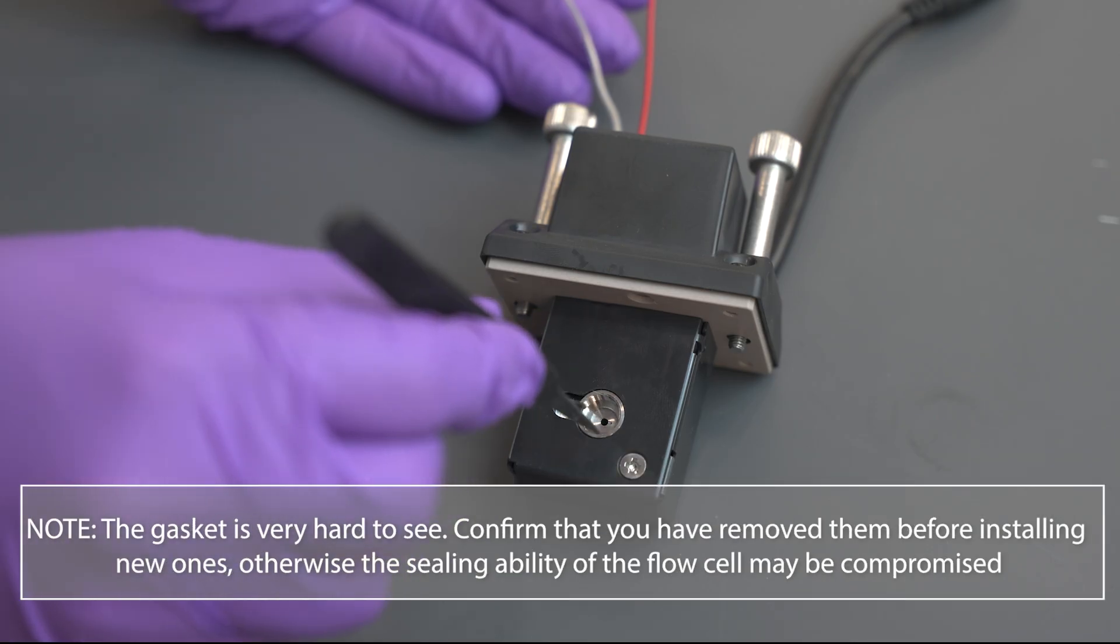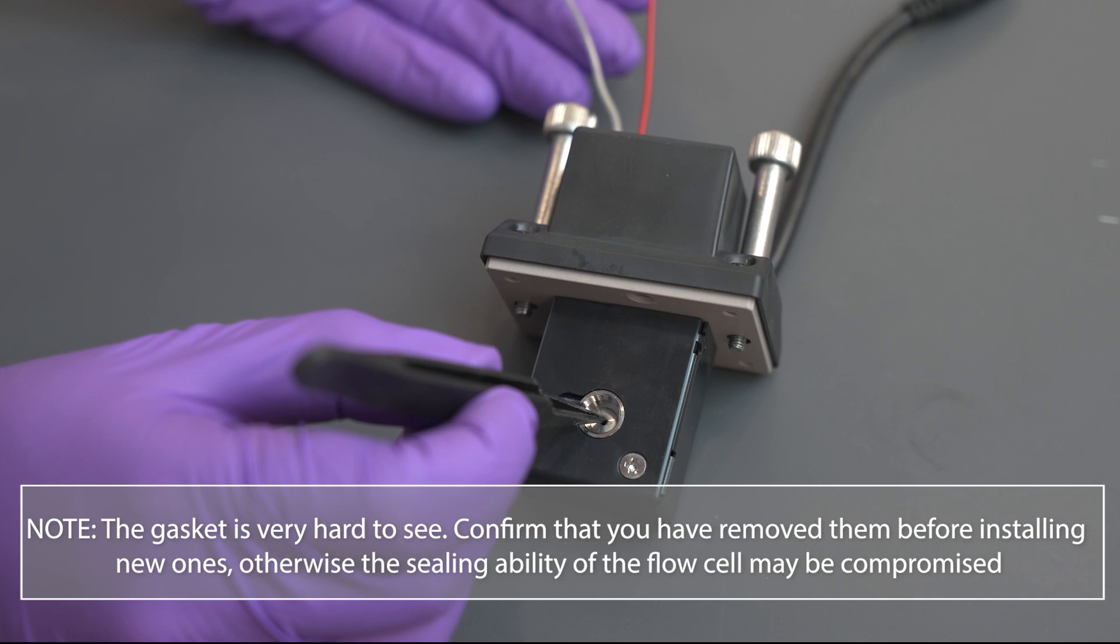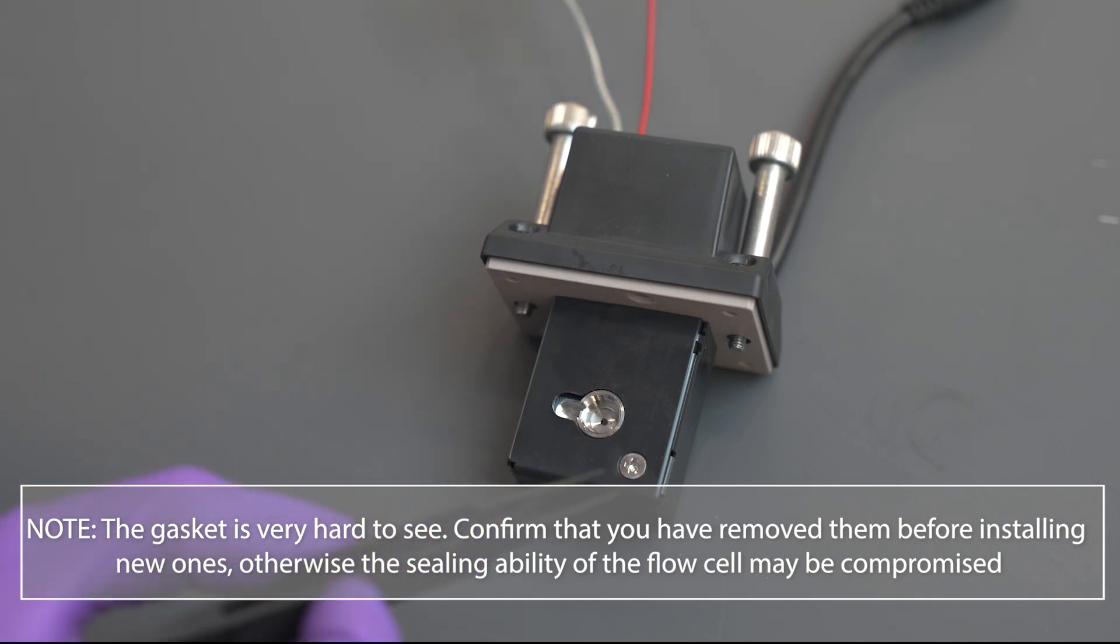The gasket is very hard to see. Confirm that you have removed them before installing new ones, otherwise the sealing ability of the flow cell may be compromised.